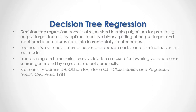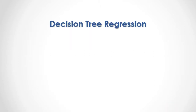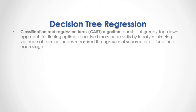For full reference, I recommend reading Breiman, Friedman, Olsen and Stone's Classification and Regression Trees, published by CRC Press in 1984. The CART algorithm consists of a greedy top-down approach for finding optimal recursive binary node splits by locally minimizing variance at terminal nodes, measured through the sum of square errors function at each stage.